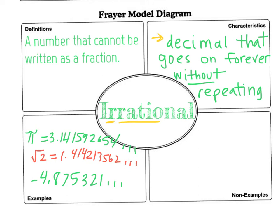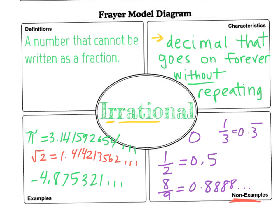Non-examples. Let's take a look at what an irrational number is not. It's not 0, it's not 1 half, which is 0.5. It's not 8 over 9, because if I do 8 divided by 9, I get 0.8888, and that repeats. It's not 1 third, which is 0.3 repeating. All of these that I just did in purple, those are rational numbers.